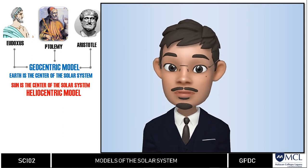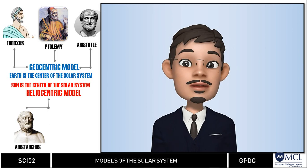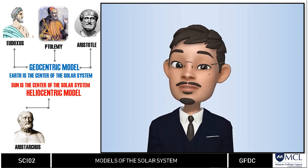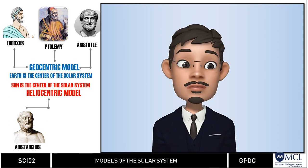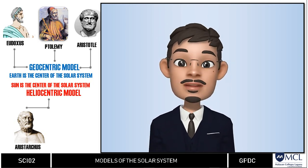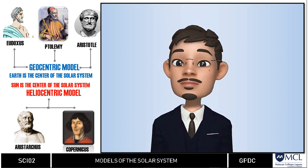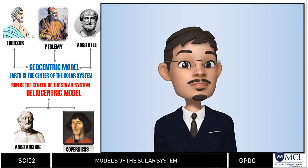For heliocentric model, Aristarchus was the first astronomer to propose that the sun is at the center with earth and the planets moving around it. He added that the earth rotates daily around an axis and revolves annually around the sun. This idea was reintroduced by Copernicus who has proven mathematically that earth was only one of the many planets that revolve around the sun.